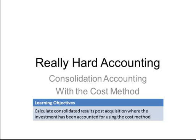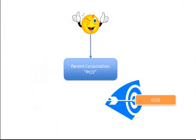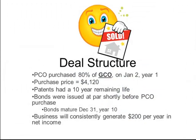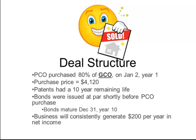With that in mind, let's get started. In this module, we will use the same facts as we presented in the previous lesson for the acquisition of GECO. As a quick review, a deal was reached and a transaction closed on January 2nd of year 1. Out of the terms of the acquisition, parent corporation purchased 80% of the outstanding shares of GECO for $4,120,000.